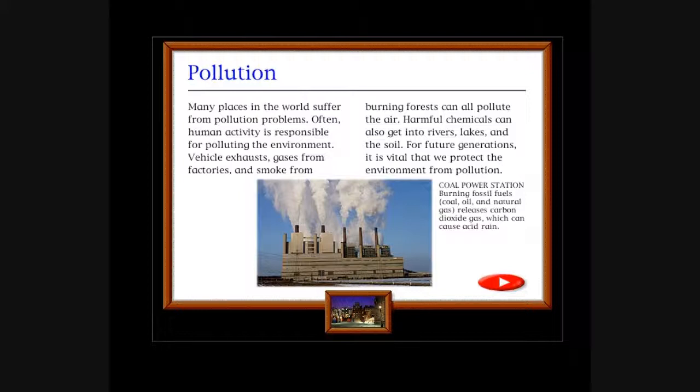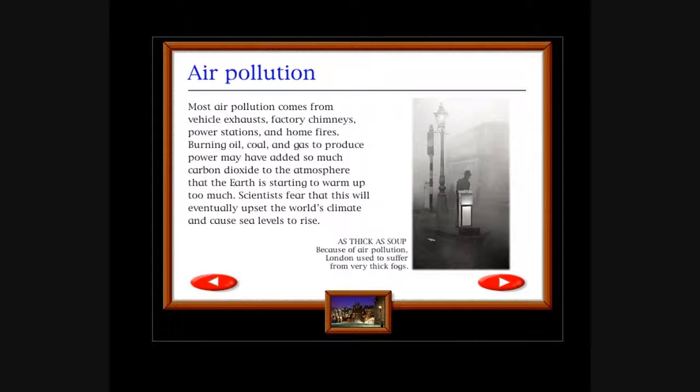Coal power stations burning fossil fuels like coal, oil, and natural gas release carbon dioxide gas which can cause acid rain. Air pollution: Most air pollution comes from vehicle exhaust, factory chimneys, power stations, and home fires. Burning oil, coal, and gas to produce power may have added so much carbon dioxide to the atmosphere that the earth is starting to warm up too much. Scientists fear this will eventually upset the world's climate and cause sea levels to rise.